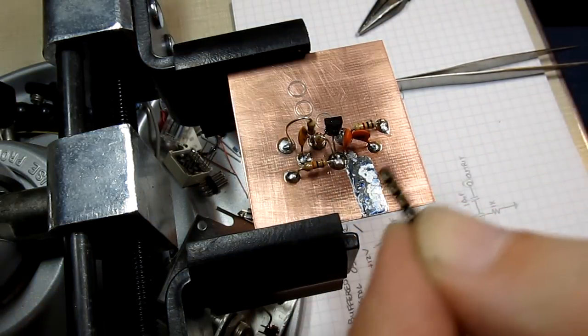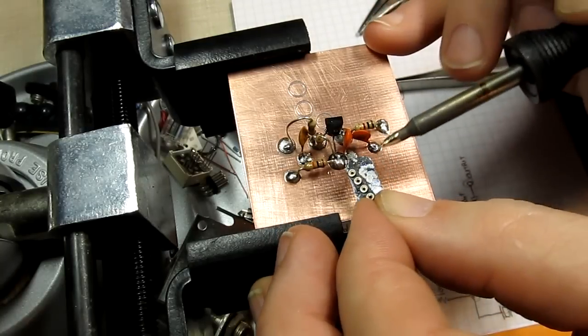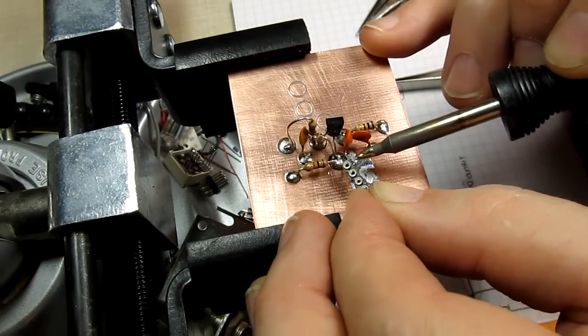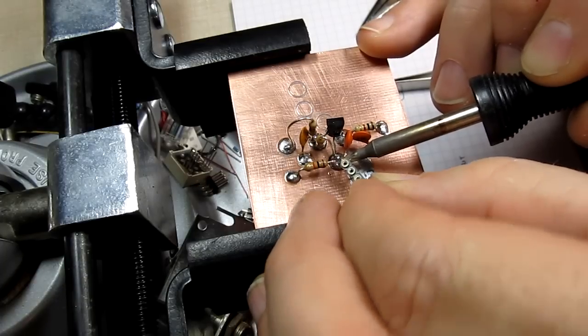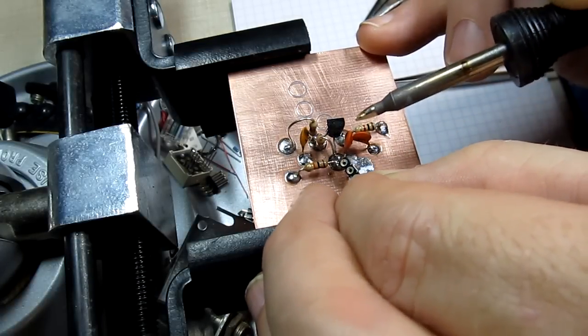Grab a soldering iron. And if I can do this under the camera, should be okay. Melt the solder in there, get that socket in place.